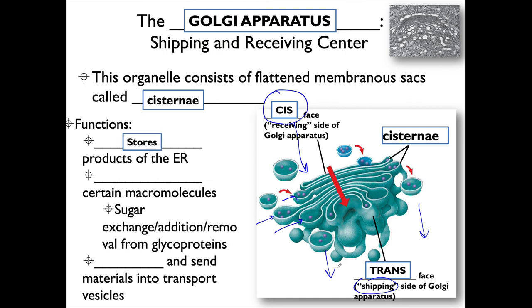The Golgi stores the products of the ER — the cis face receives them, proteins are modified inside, repackaged, and sent to another location in the cell. It will modify certain macromolecules: it could add sugars, replace sugars, or remove some sugars from a glycoprotein depending on the cell's needs, as dictated by cellular metabolism and the DNA instructional code in the nucleus. Then it packages up the new product and sends it on its way.